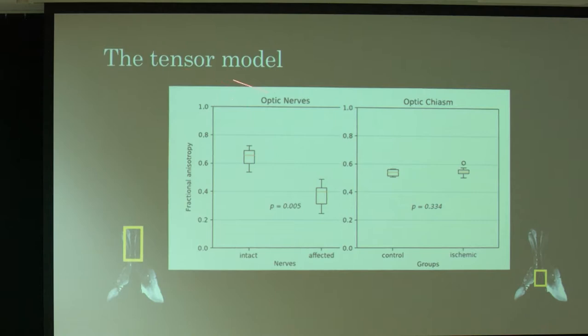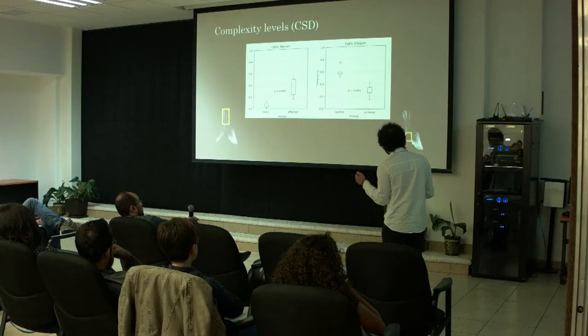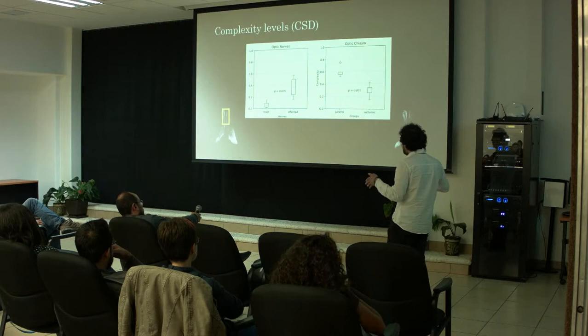Regarding the results with the Tensor model: the Tensor model can differentiate between the intact optic nerve and the affected one. But in the case of the optic chiasm, it fails. In the case of complexity, as expected, in the optic nerves the level is very low, but it goes higher in the affected nerve. In the optic chiasm, we have a higher level of complexity in the control group compared with the ischemic group, because in the ischemic group we have the presence mainly of just one population of fibers — the other one is degenerated.